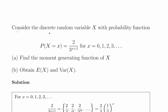In this presentation we are going to look at discrete random variables. We have a discrete random variable defined by the probability density function: P(X = x) = (2/3)^(x+1) for x = 0, 1, 2, 3, 4, all the way up to infinity. We need to find the moment generating function of X and obtain the expected value of X and the variance of X.